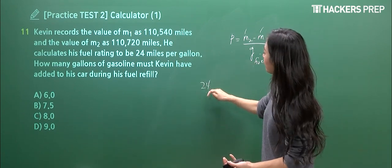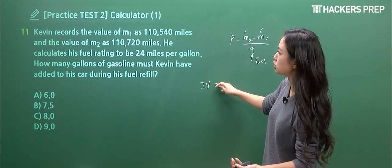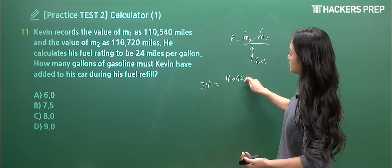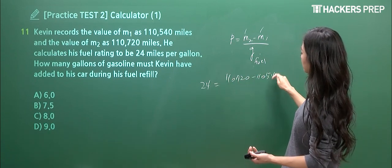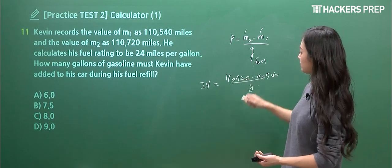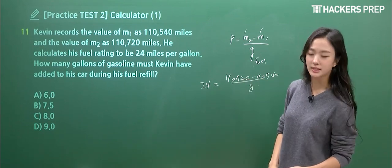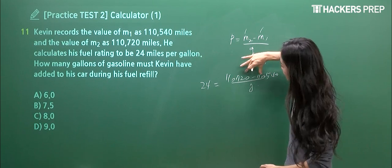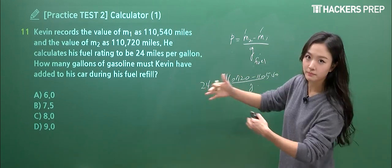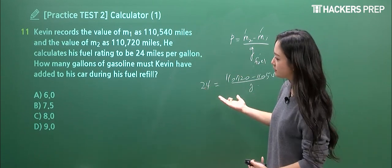You just plug this in. 24 is going to be M2, 110,720, minus 110,540, everything divided by G. And I think you guys can finish this up. You plug it into a calculator, you take the difference, divide it by 24, you swap places, and you get your final value of G.